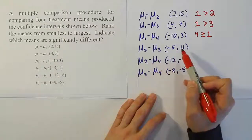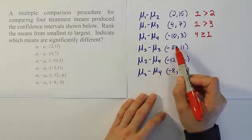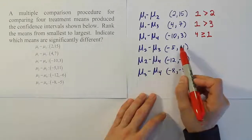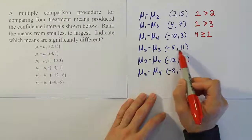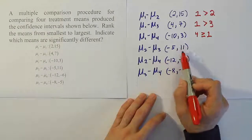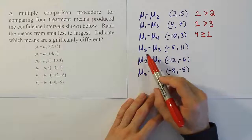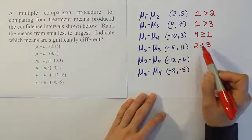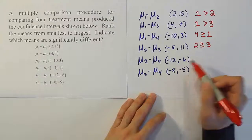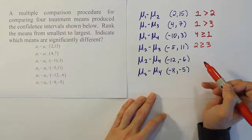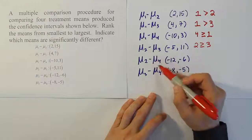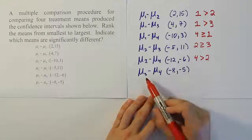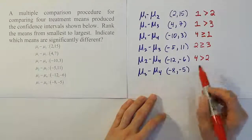For mean 2 minus mean 3, the interval contains 0, so there's no significant difference. But since it's more positive — from 0 to 11 is larger than from negative 5 to 0 — the first mean is slightly larger, so we say 2 is greater than or equal to 3. For mean 2 minus mean 4, the interval is entirely negative, so mean 4 is greater than mean 2. And the last interval is completely negative, meaning mean 4 is greater than mean 3.